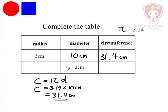In the second row of the table, we know that the diameter is 2 centimeters. So the radius will be what? Half of the diameter. That's going to be 1 centimeter.